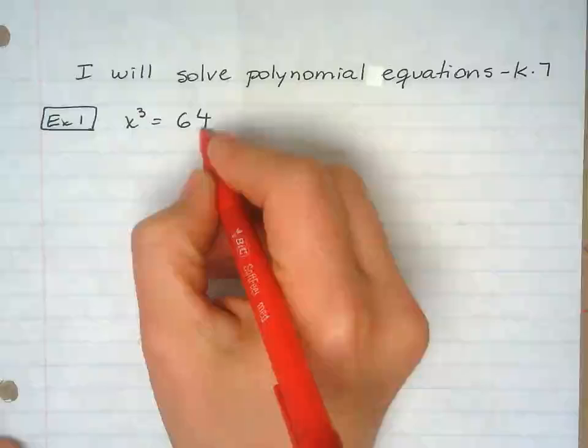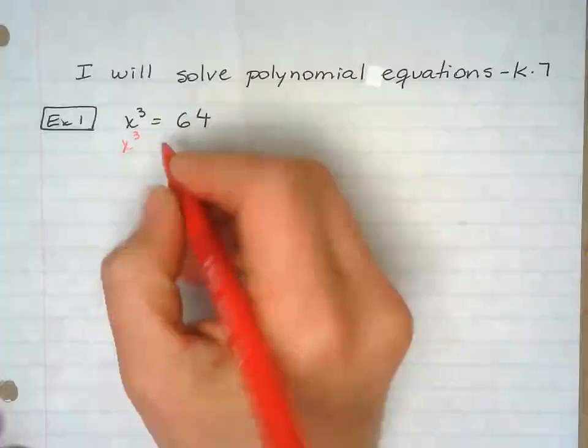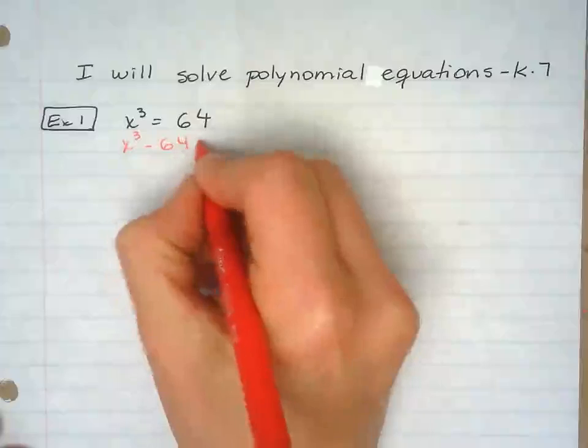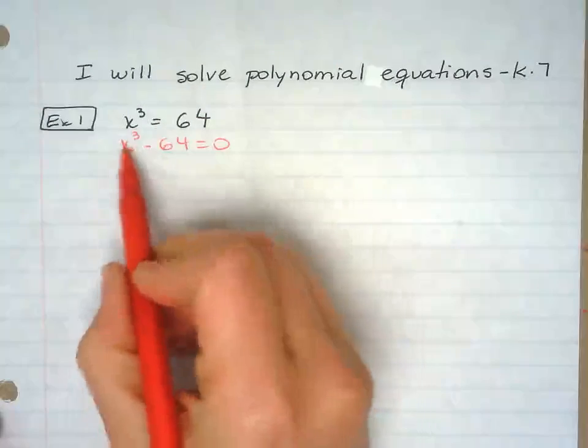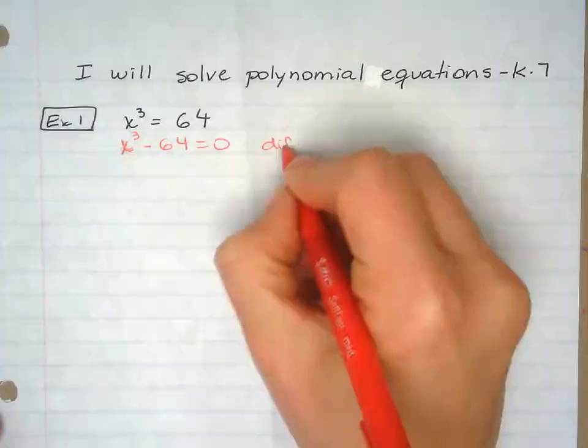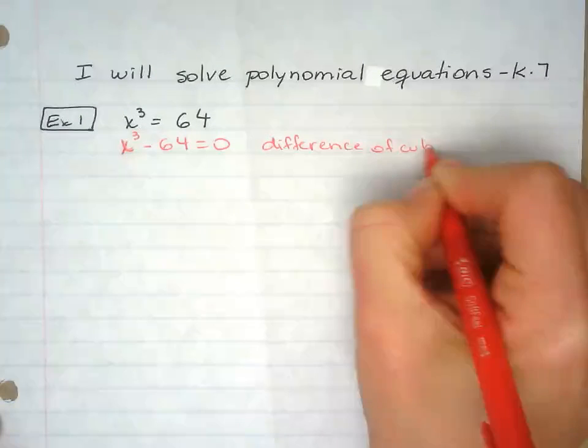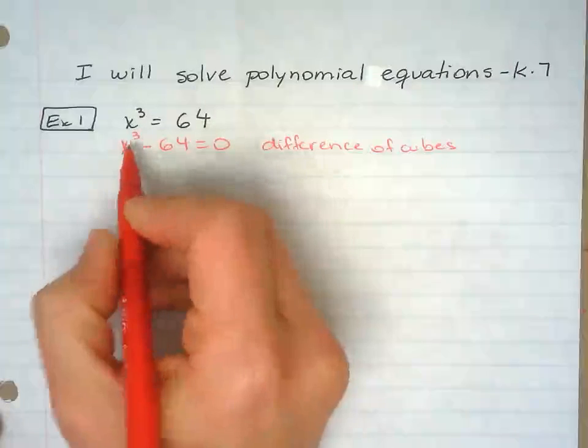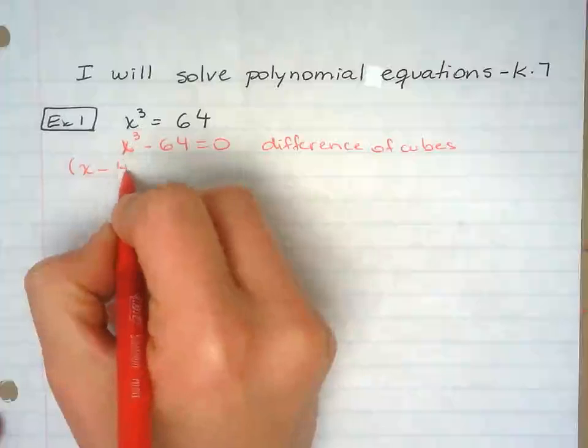So first thing I want to do here is do minus 64 from both sides, so I can get difference of cubes. And then when I look back at your notes, you're going to do difference of cubes here. And you know that you have to cubic root each one of those, so you have x minus 4.